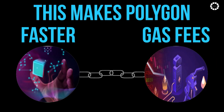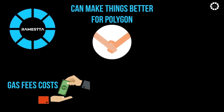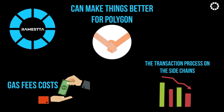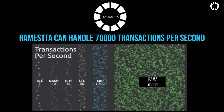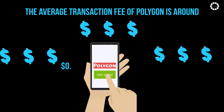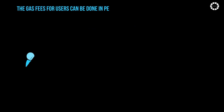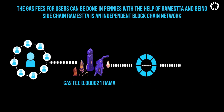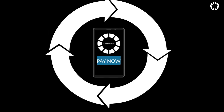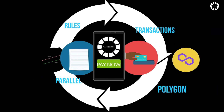Romesta Layer 2 scaling solutions make the Polygon base blockchain lighter, faster, and cheaper for gas fees. Romesta can handle 70,000 transactions per second. The average transaction fee on Polygon is around $0.05 to $0.1 per transaction, and gas fees for users can be done in pennies with the help of Romesta. As a sidechain, Romesta is an independent blockchain network that allows transactions to be processed in parallel with Polygon.